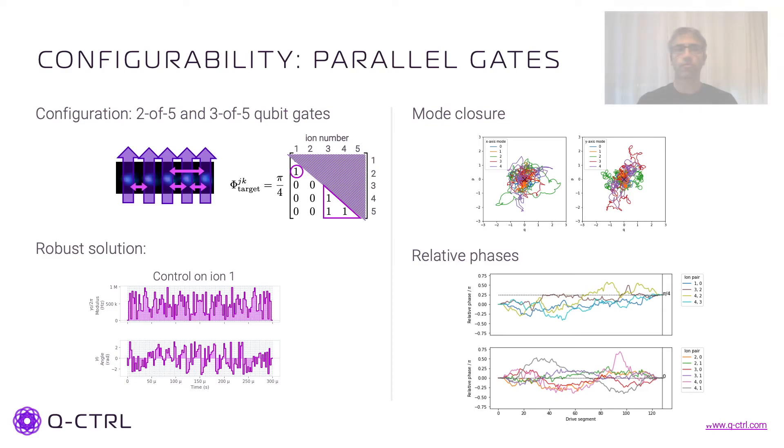Now in terms of configurability, what I wanted to tell you about is that we can perform different gates simultaneously. For example, in this case I consider five different lasers, and I'm using them to entangle ions 1 and 2, and then entangle the other three ions, 3, 4 and 5, with the other lasers.